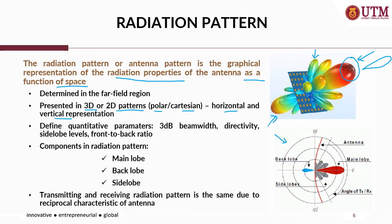This is an example of a 2D radiation pattern. The components that can be measured from the radiation pattern include the 3 dB beam width, and the directivity — the intended direction, whether it is pointing to the front at 0 degrees or at an elevation angle of 30 degrees. We can also identify the side lobe levels as well as the front-to-back ratio and others.